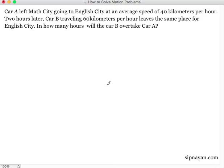Car A left Math City going to English City at an average speed of 40 kilometers per hour. Two hours later, Car B traveling 60 kilometers per hour leaves the same place for English City. In how many hours will Car B overtake Car A?